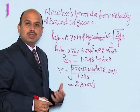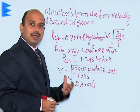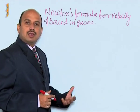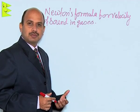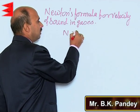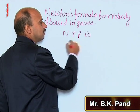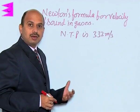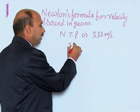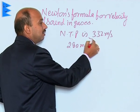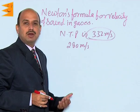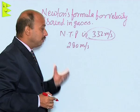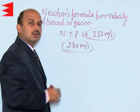According to Newton's assumptions, velocity of sound in air was calculated as 280 meter per second. However, the experimental value of the velocity of sound in air at NTP (normal temperature and pressure) is 332 meter per second. Newton calculated 280 m/s whereas the experimental value is 332 m/s, so there is an error in this calculation, meaning Newton's assumption was not correct.